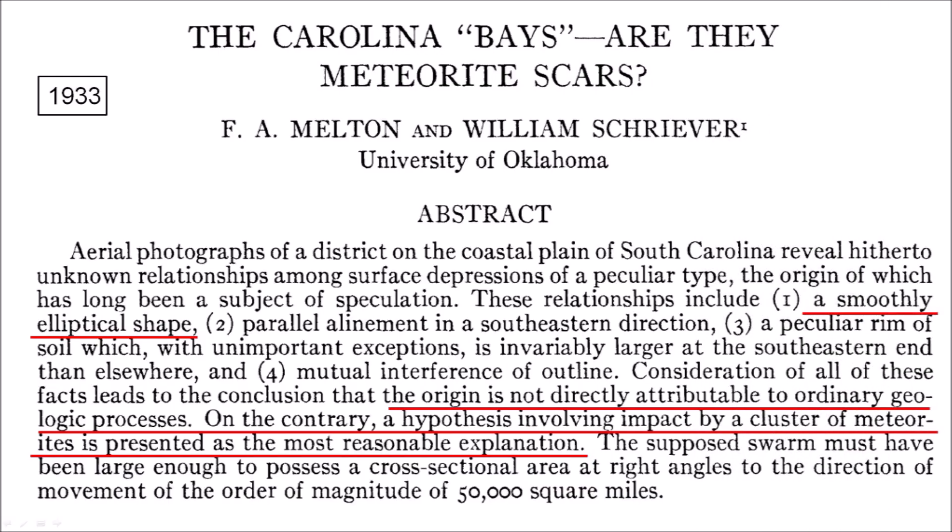In 1933, Melton and Shriver wondered whether the Carolina Bays could be meteorite scars. They noted that the bays have a smoothly elliptical shape, parallel alignment, a rim of soil at the southeastern end, and the bays can overlap while maintaining their elliptical shape. These authors concluded that the origin of the bays is not directly attributable to ordinary geologic processes and that the origin of the Carolina Bays from meteorite impacts was the most reasonable explanation.